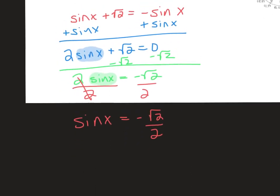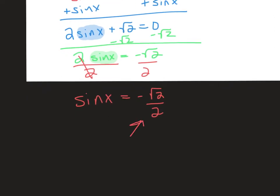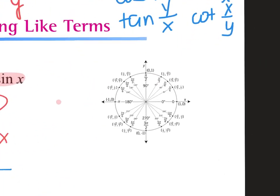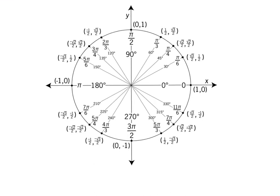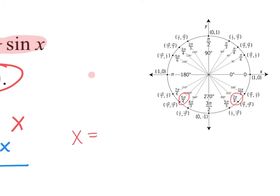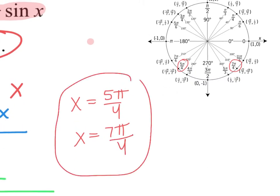Sine x = −√2/2 is not the final answer. Now look on the unit circle where y values equal −√2/2. Those are at 5π/4 and 7π/4. So the answers are x = 5π/4 and x = 7π/4.